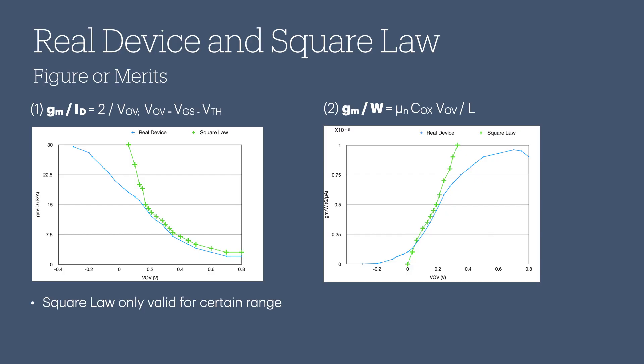In these two graphs, we've seen that the square law is only valid for certain ranges of overdrive voltages. VOV is like a knob that sets the width and drain current for a given transconductance GM. This lookup table, unlike the square law, is able to capture the real transistor behavior across the entire range of overdrive voltage VOV.